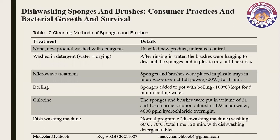Table 2 shows the cleaning methods for sponges and brushes. These include: new product washed with detergent as the untreated control; washed in detergent water followed by drying; microwave oven treatment; boiling treatment; chlorine treatment; and dishwashing machine treatment. Among them, chlorine treatment is the most effective.